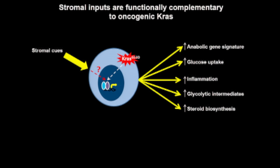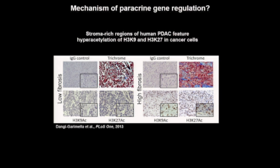To get at these targets, I wanted to better understand the mechanism by which stromal signals regulate gene expression. A paper came out in which authors took tissue arrays of human pancreatic cancer and divided them into low fibrosis (stroma poor) and high fibrosis (stroma rich) regions. They stained for two acetylated histone marks: acetylated H3K9, a marker of active promoters, and acetylated H3K27, a marker of active enhancers. Both marks associated with gene activation are significantly enriched in stroma-rich regions of human pancreatic cancer.